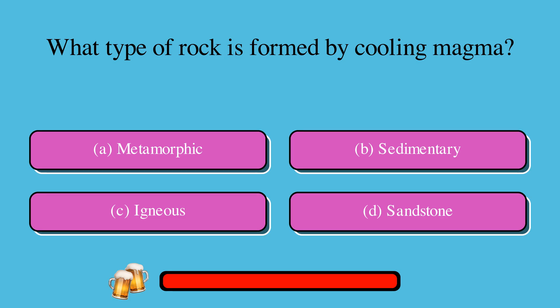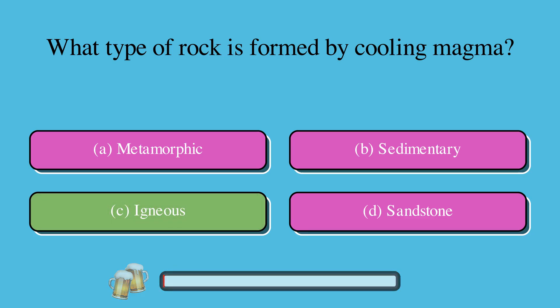What type of rock is formed by cooling magma? A. Metamorphic, or B. Sedimentary, or C. Igneous, or D. Sandstone? The correct answer is C. Igneous.